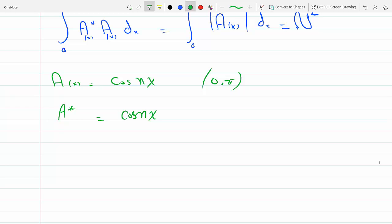So to find the norm, you'd have to multiply them, so cosine(nx) cosine(nx) dx from zero to pi, and then when you're done you have to take the square root. That's N.